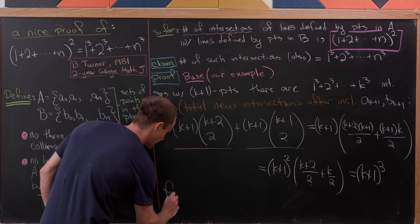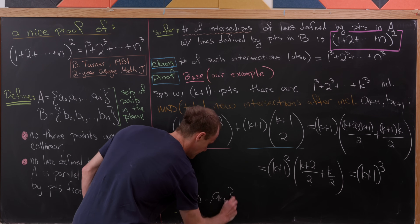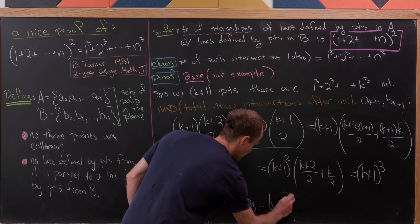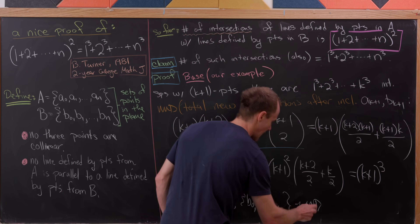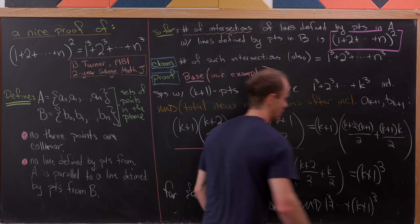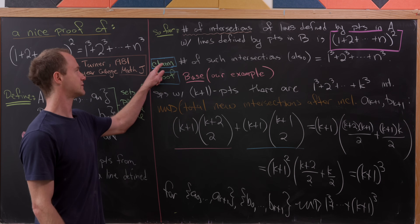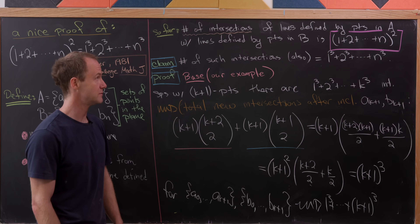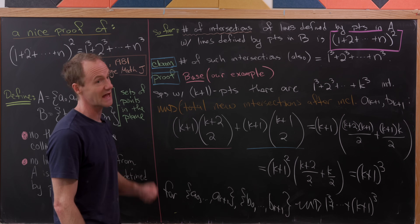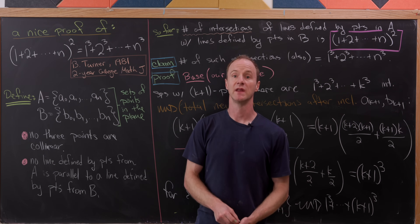So there are k plus one cubed new intersections, which finishes the induction step. That means for sets a₀ up to aₖ₊₁ and b₀ up to bₖ₊₁, there are one cubed up to k plus one cubed total intersections. Completing this induction step finishes the proof of our claim, and as we discussed, that's exactly what we needed to prove our main identity. And that's a good place to stop.